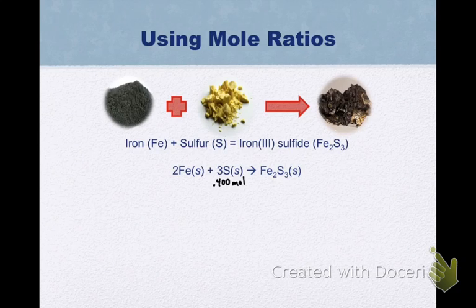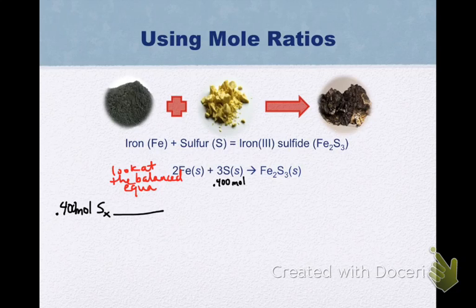So for our first example, we're going to take 0.4 moles of sulfur. And moles of sulfur is what I'm getting rid of. So remember, that goes on the bottom. So I look at the balanced chemical equation. Once again, I look at the balanced equation. So if your equation is not balanced, this will give you the wrong value. So that's what I'm doing right here. The balanced equation tells me for 3 moles of sulfur, I react it with 2 moles of iron.